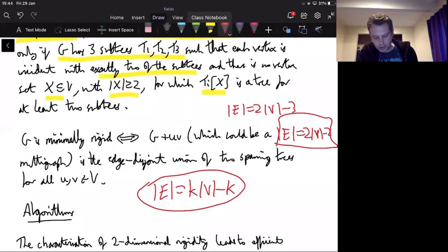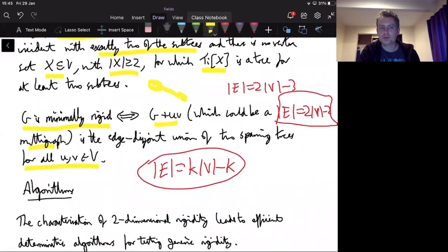And so if you make this observation, then maybe it's not so surprising, but the second version is that the graph is minimally rigid if and only if G plus uv, and this uv could be an edge that already existed. So it could be that G plus uv is a multigraph, or it could be a non-edge. Either way, but this G plus uv should be the edge disjoint union of two spanning trees. But that needs to be true, not just for some edge, but for all possible pairs of vertices in the graph.